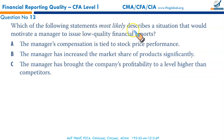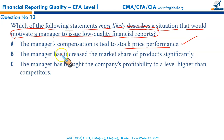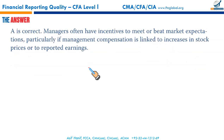Which statement most likely describes a situation motivating a manager to issue a low quality financial report? The manager's compensation is tied to stock price — yes, there is a clear incentive to manipulate numbers and cook the books to earn the compensation. If the manager has increased market share significantly or brought profitability higher than competitors, things are good — no need to play with the numbers. A is the right answer.